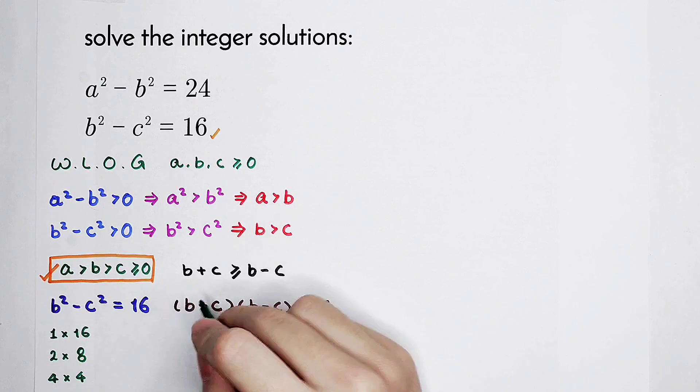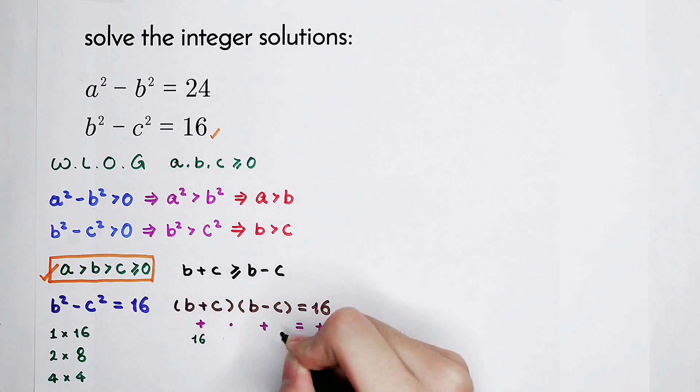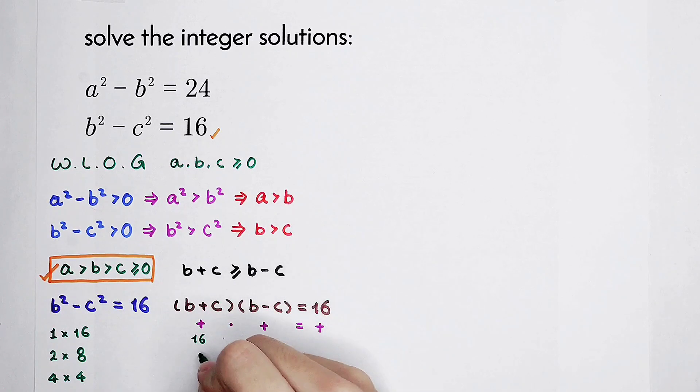So here, b plus c is 16 and b minus c is 1; b plus c is 8 and b minus c is 2; b plus c is 4 and b minus c is 4.